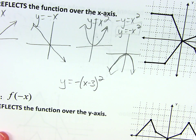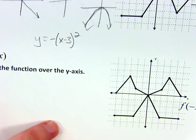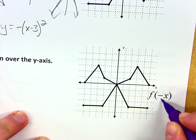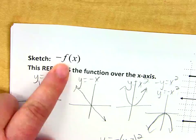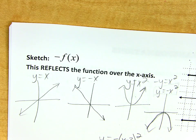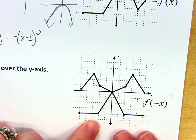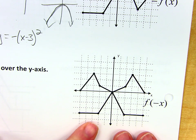We can also reflect a graph over the y-axis. How do we do that? We go in there and we make x negative itself. So that's different than putting a negative outside in front of the whole thing — that flipped over the x-axis. Now I'm plugging in a negative x, and that's going to flip everything over the y-axis.